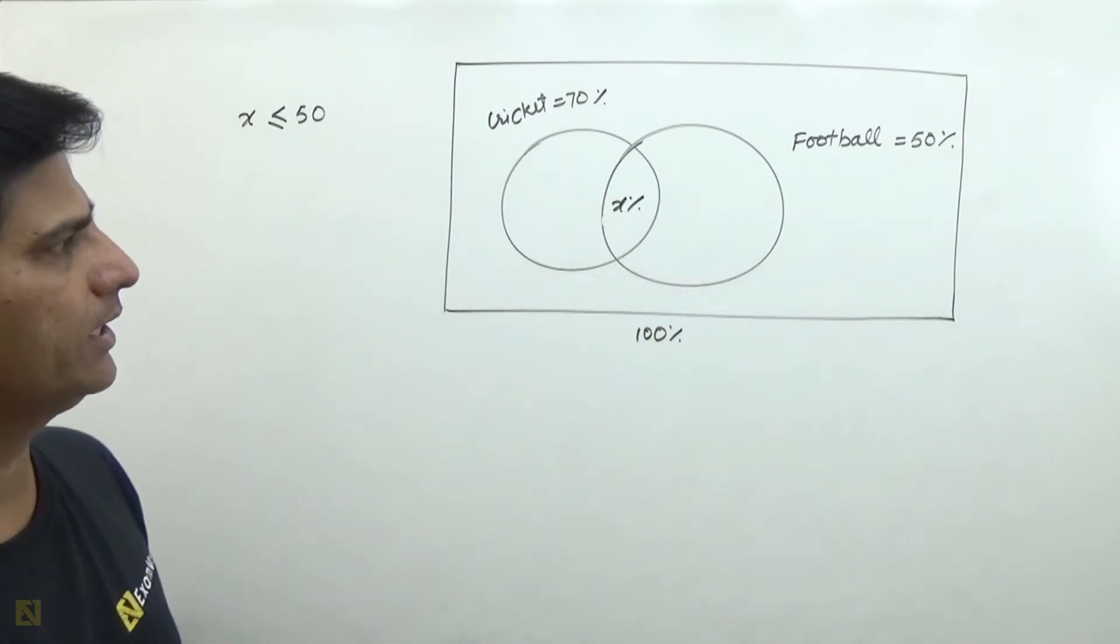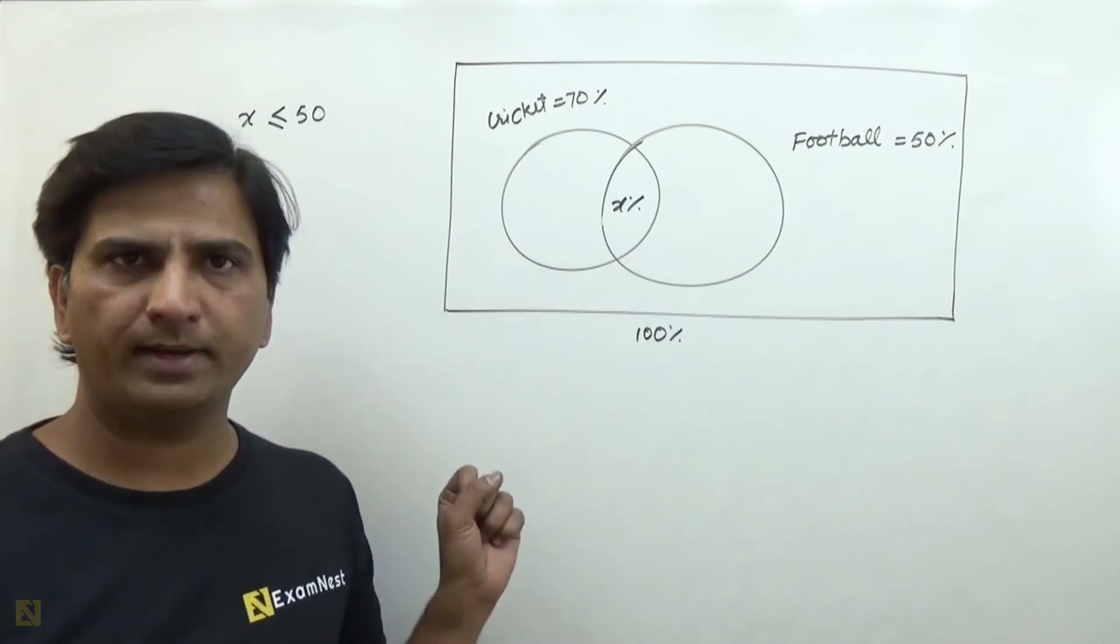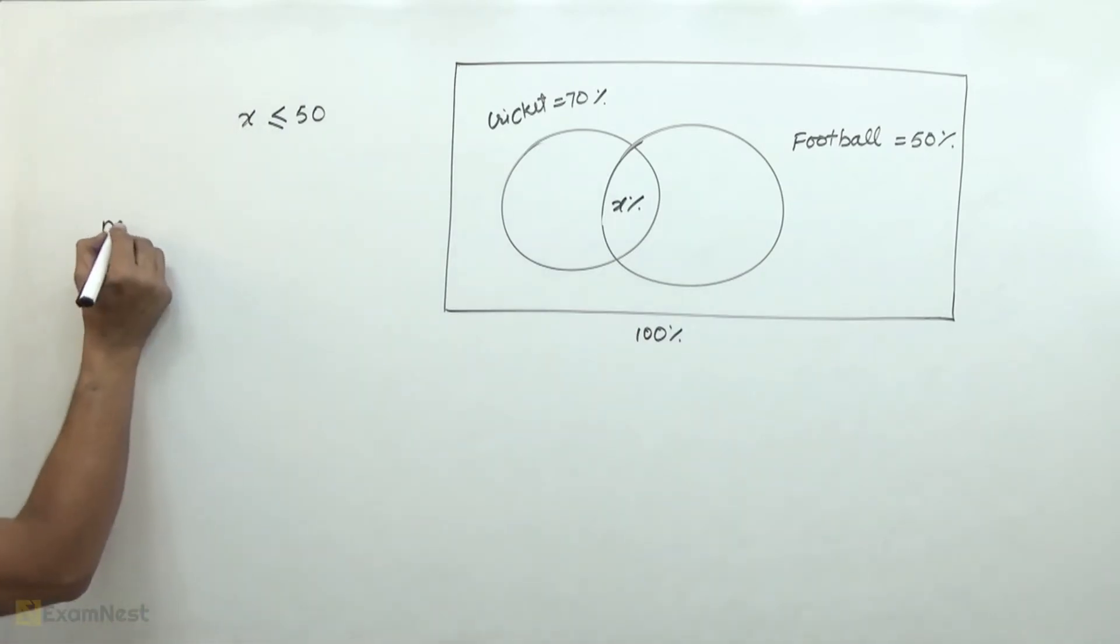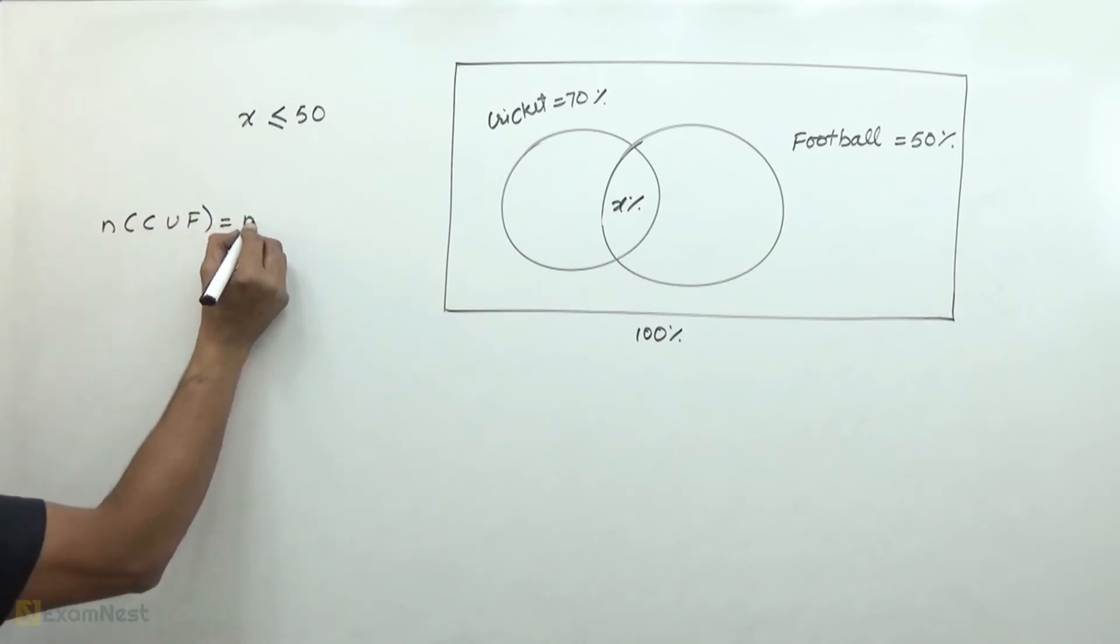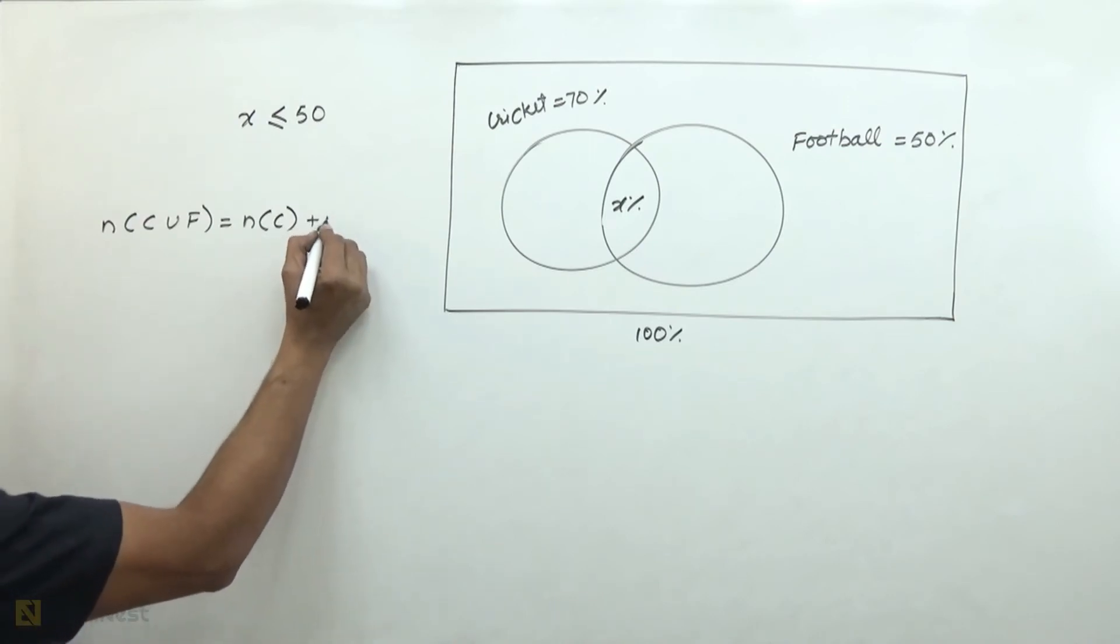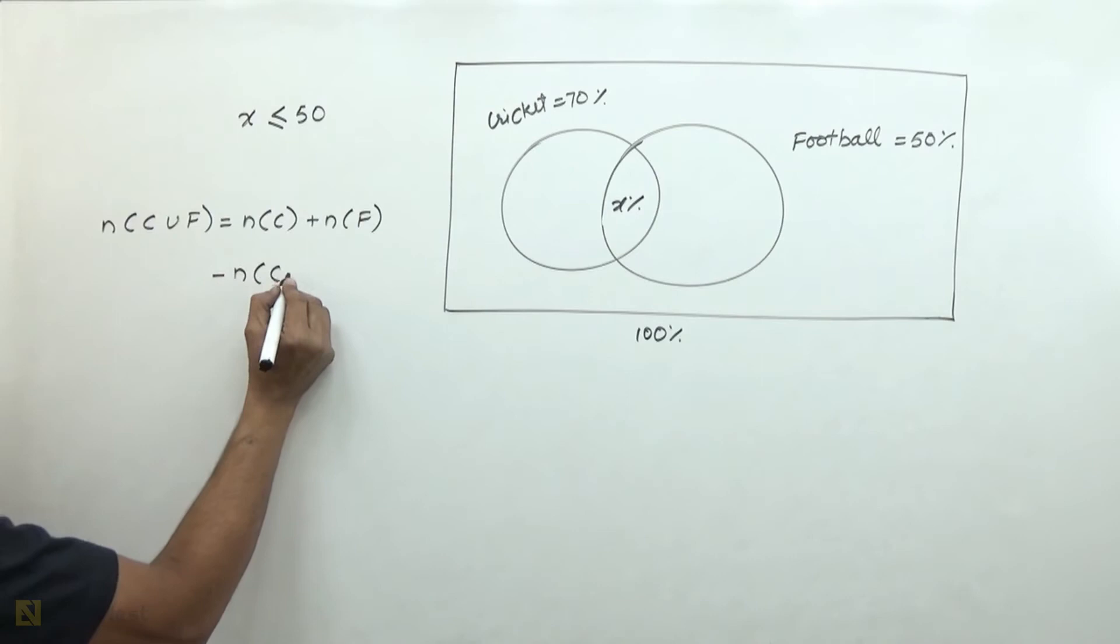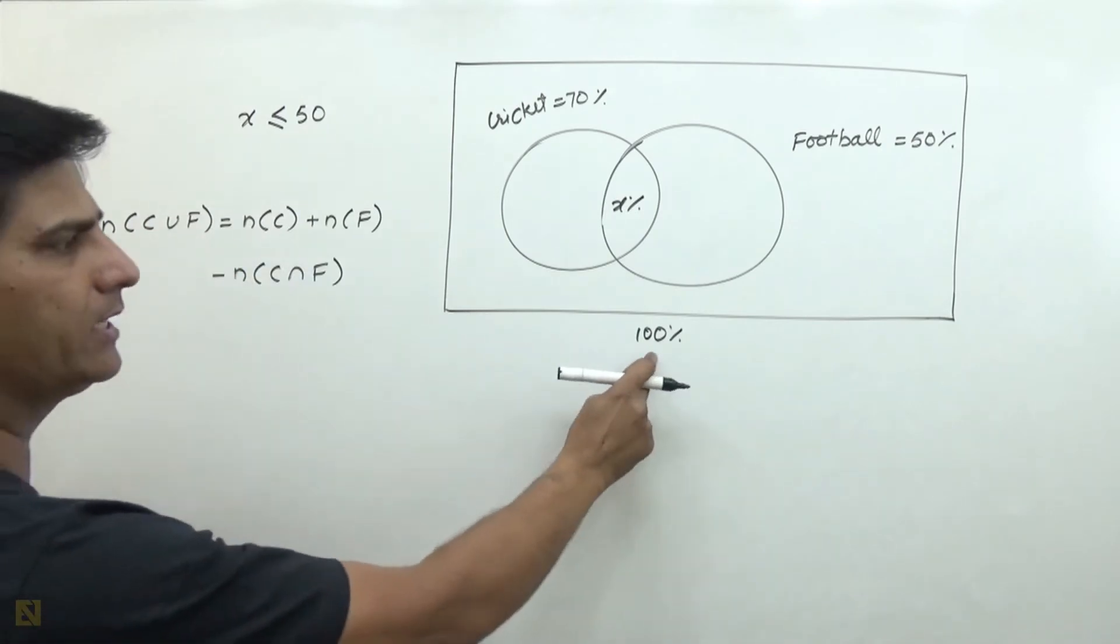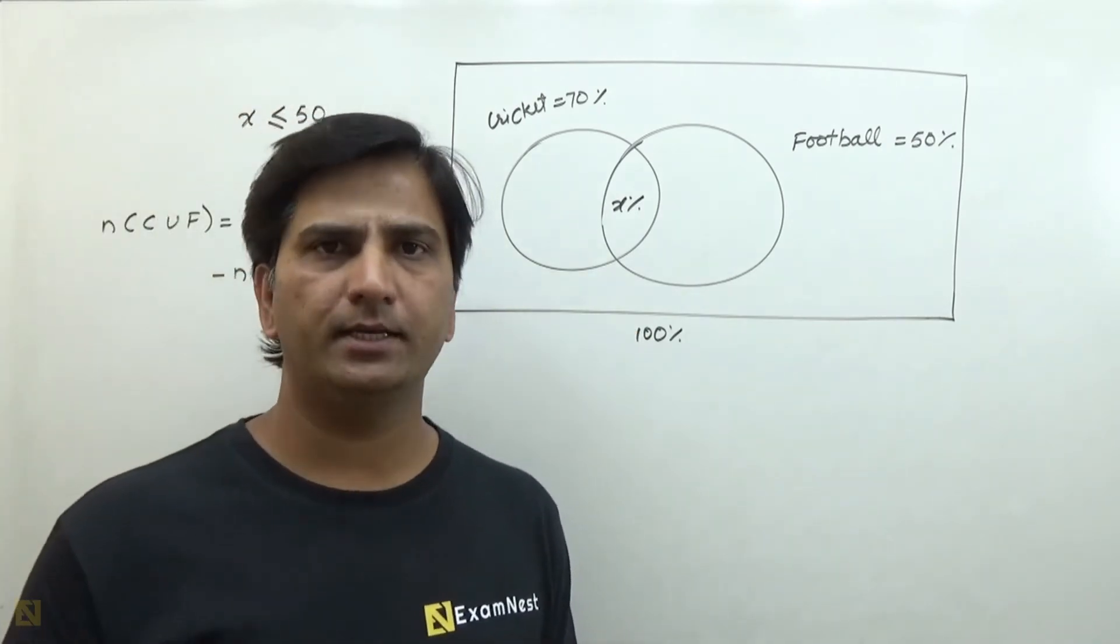Then we will try to minimize the X. Our basic formula is n cricket union football, which equals number of boys who like cricket plus number who like football minus number who like cricket and football.